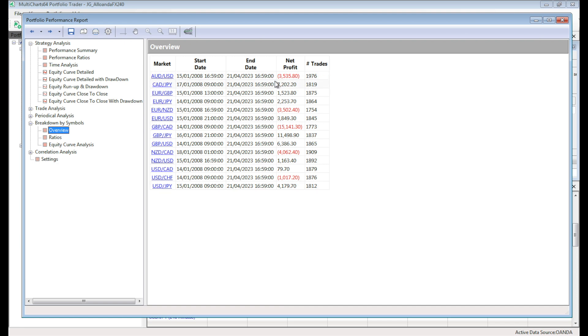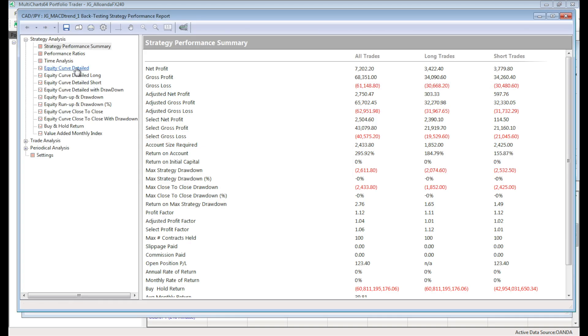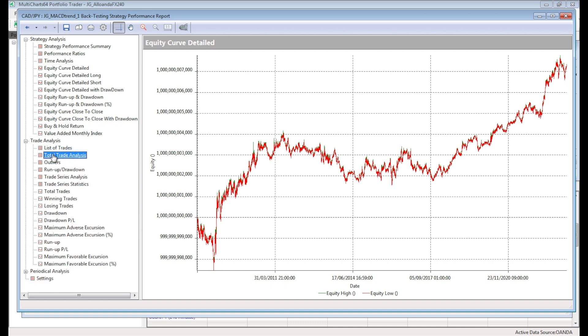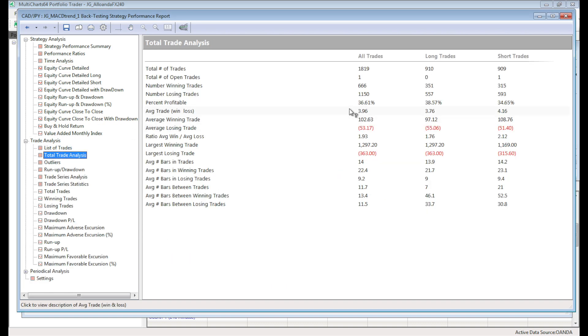Here we can see the individual market results. Australian dollar, US dollar didn't work. Canadian, Japanese yen showing some positive results. That's what the equity curve looks like. Not great but maybe it shows some promise. We've got a low average trade of just under 4 pips per trade. So that's something that will have to be increased to be able to trade this strategy.